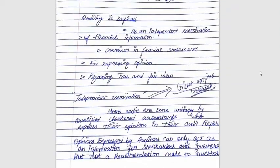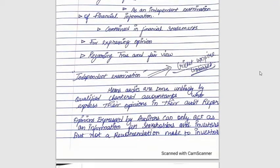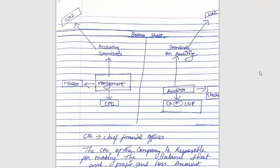To recap the full definition: auditing is defined as an independent examination of financial information — this financial information is contained in financial statements — for expressing an opinion regarding the true and fair view of those financial statements. So auditing is an independent examination of financial information contained in financial statements for expressing an opinion regarding true and fair view.